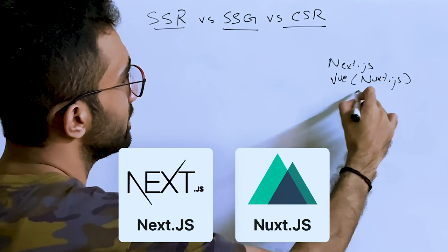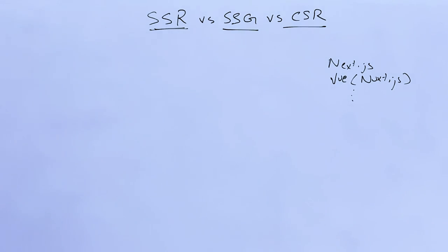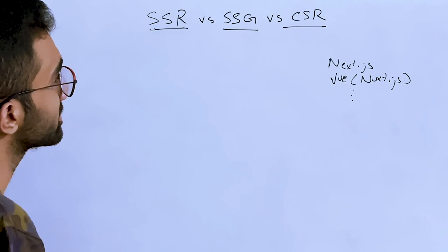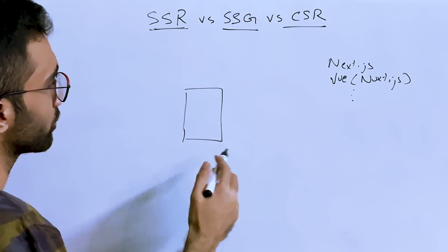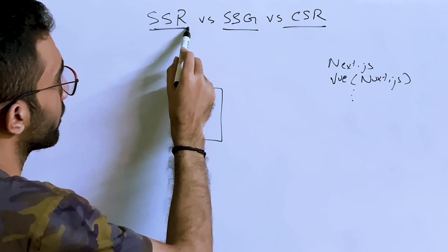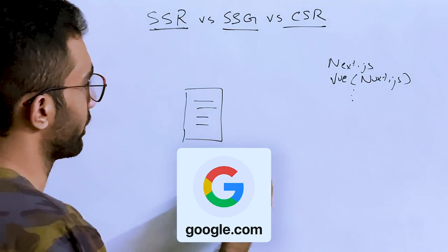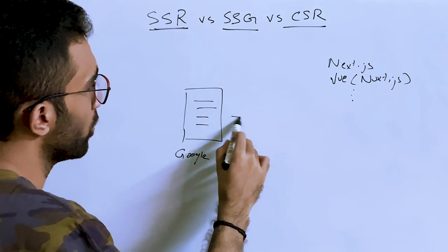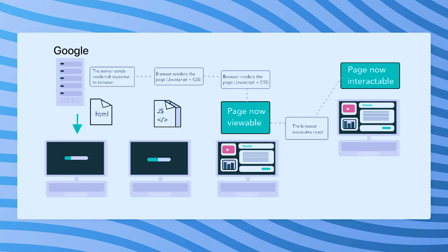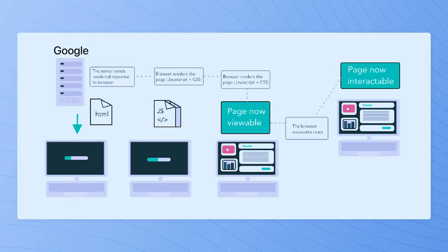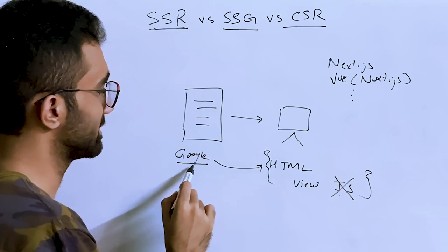To understand these rendering strategies, it helps to understand what happens when you load a website. In server-side rendering applications — like google.com, a classic example — the server sends you a complete HTML document. You can view it even with JavaScript disabled. Google sends enough information that the page is visible, including the logo and buttons.